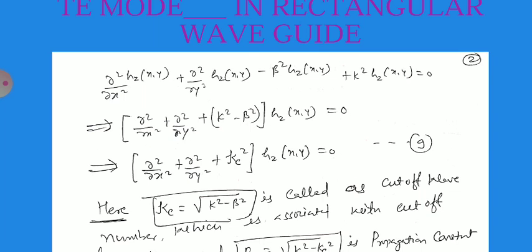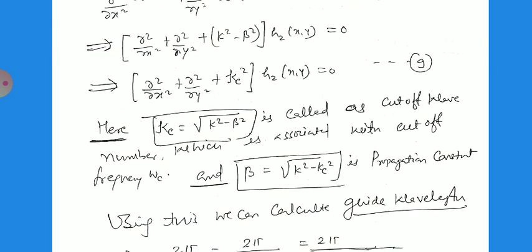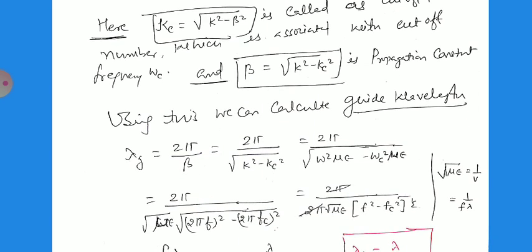The cutoff wavenumber is kc equals root of (k² minus beta²). The phase constant beta equals 2pi over lambda. Using this we can calculate the guide wavelength, which is the wavelength inside the waveguide: lambda_z equals 2pi over beta.